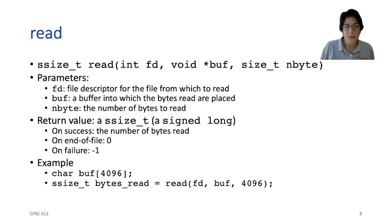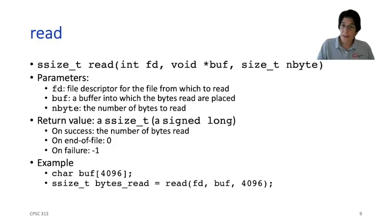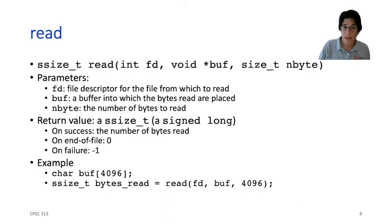Now let's look at read and write. Both have roughly the same structure: they take a file descriptor, a buffer — an address corresponding to a chunk of data — and a number of bytes. For read, we're saying to the operating system: find the file represented by this file descriptor and read this many bytes into this buffer. Tell me how many bytes you read. If we're at the end of the file, return zero. If you read some bytes successfully, tell me exactly how many.